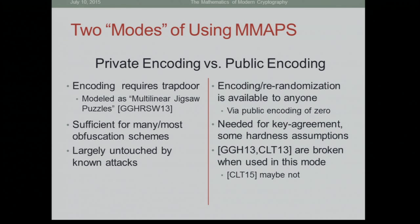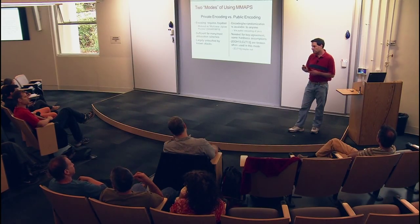On the other hand, in public encoding mode, you want everybody to be able to encode, or at the very least to re-randomize existing encodings. To do that, you need to publish some more stuff for everybody to use — in particular, encodings of zero. This is needed for key agreement typically. In this setting, the original encoding schemes of GGH and CLT are basically completely broken. CLT15 fixes it, so maybe CLT15 can still be used in this mode.